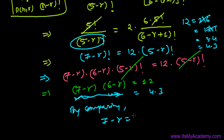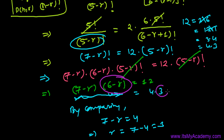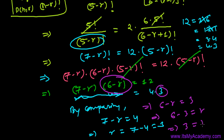By comparing both sides, we get 7 minus R equals 4, therefore R equals 7 minus 4, which is 3. We can verify: 6 minus R equals 3 also gives R equals 3. So anyhow, R equals 3.